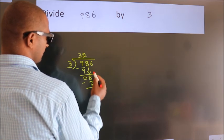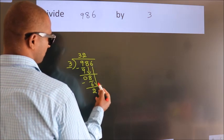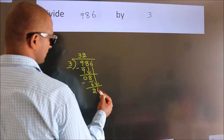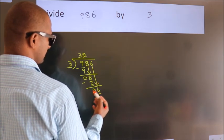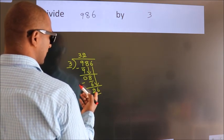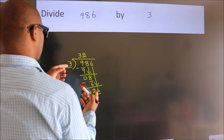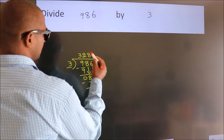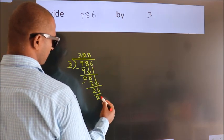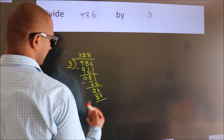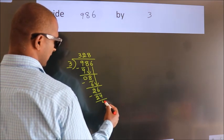After this, bring down the beside number. So 6 down. So 26. A number close to 26 in 3 table is 3 8's, 24. Now we subtract. We get 2.